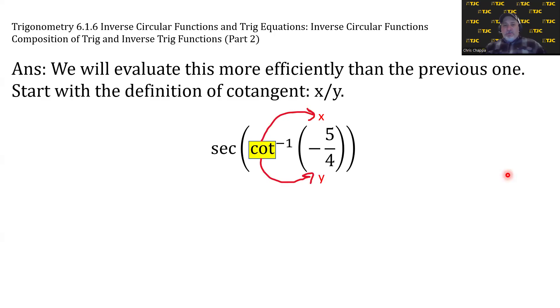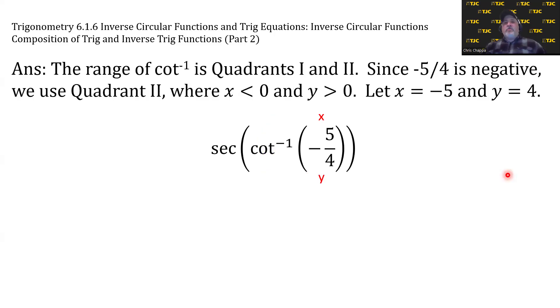The range of cotangent inverse is quadrants 1 and 2. Go back and look at the table if you didn't know that. Since negative 5 fourths is negative, we use quadrant 2. Remember, everything's positive in quadrant 1. Now in quadrant 2, x is less than 0 and y is greater than 0. So the negative in front of the 5 fourths will go with the x. x is negative 5, y equals 4.